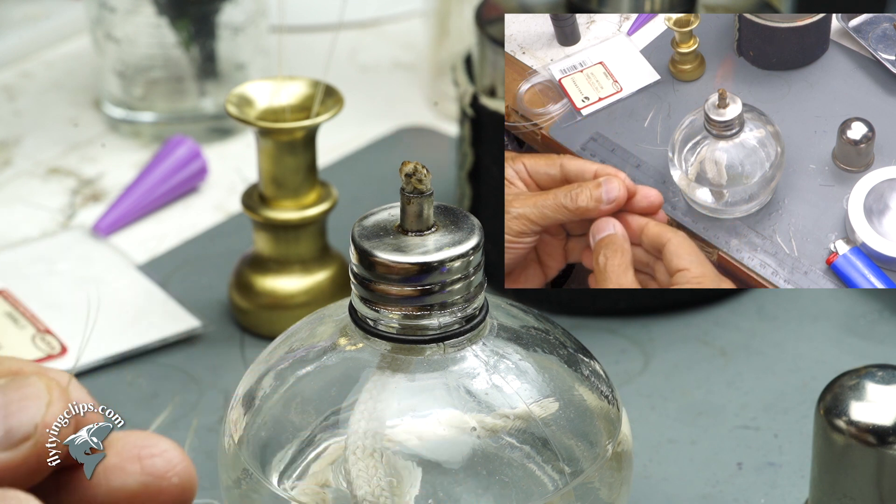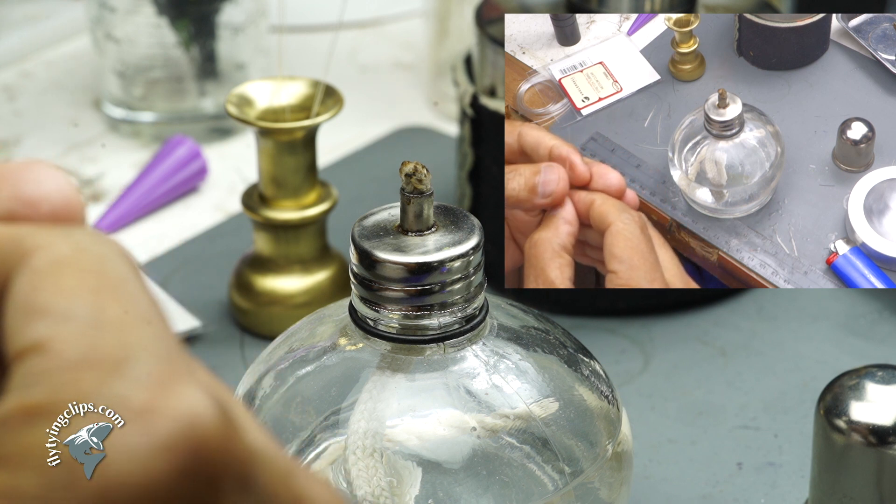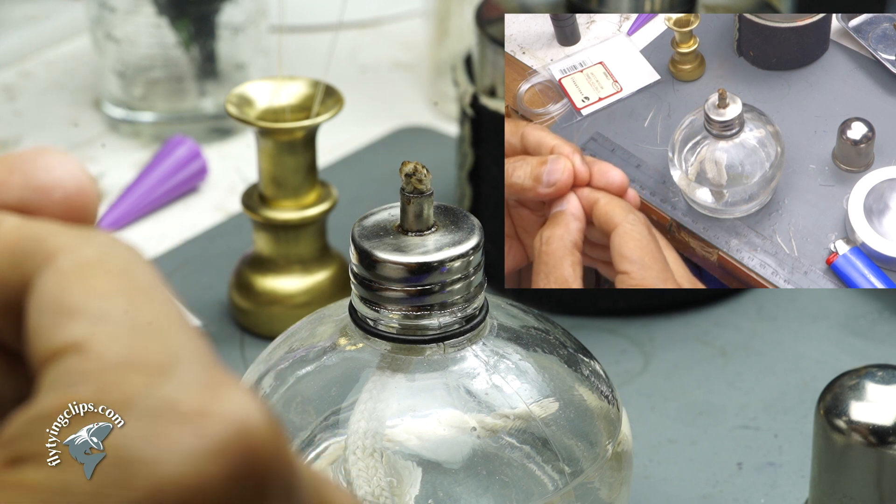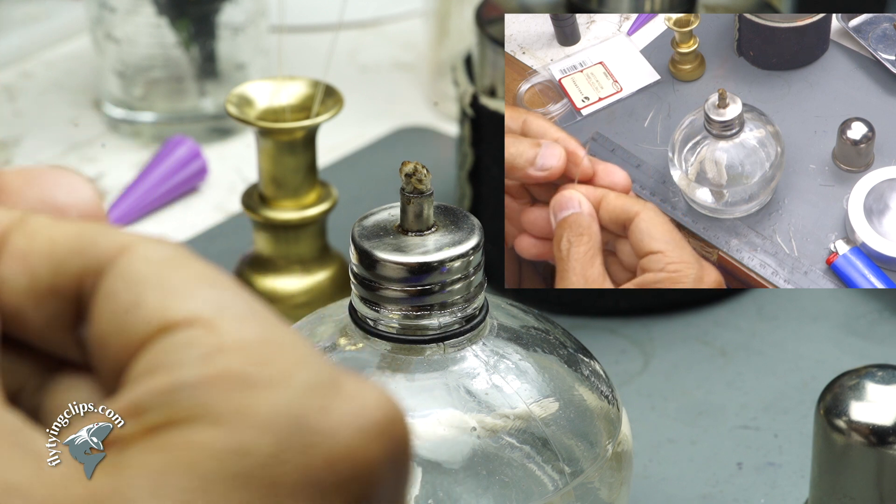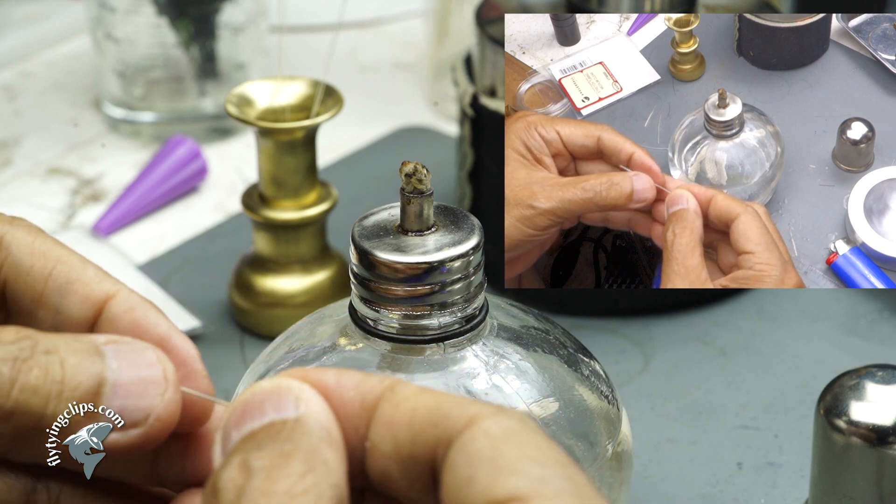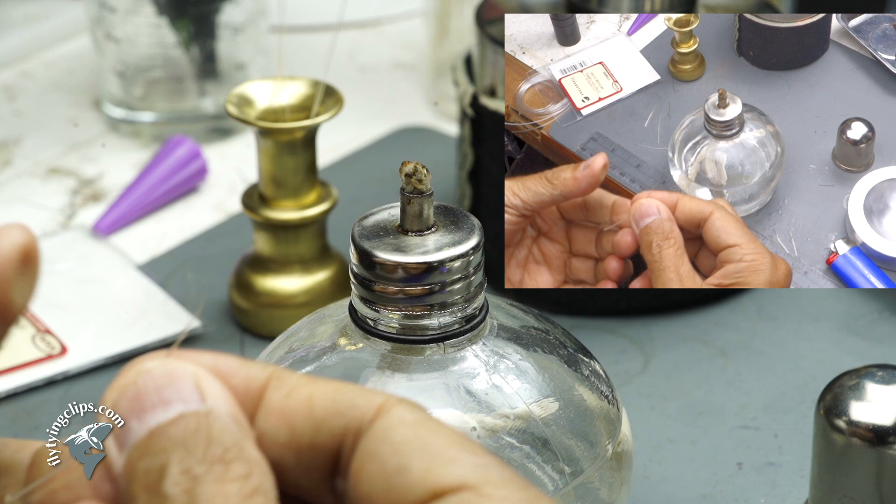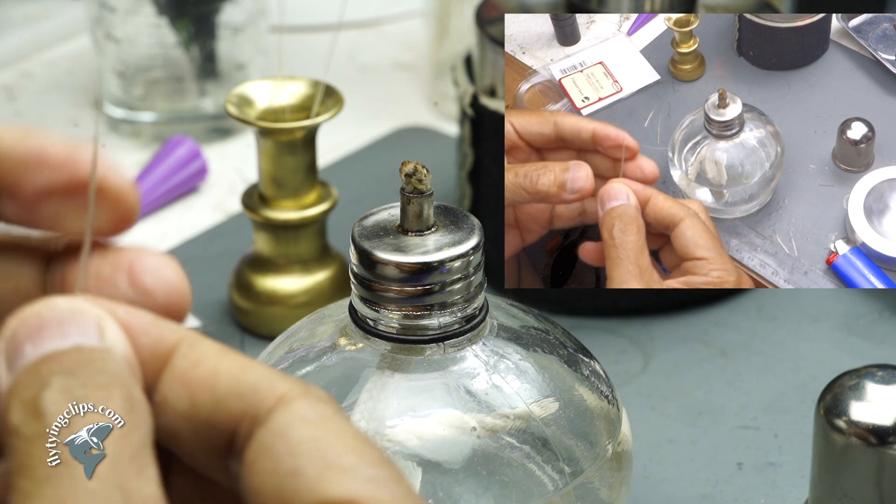Now what I want to do is bring it into the tapered end almost to where the hair splits. That's why I like using this boar bristle because it's naturally split and it curls. So I push it in far enough so that it's just barely starting to split the hair.